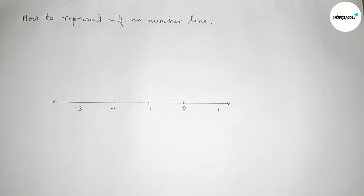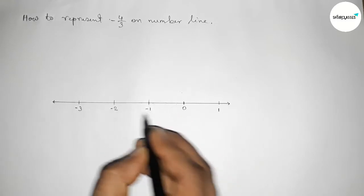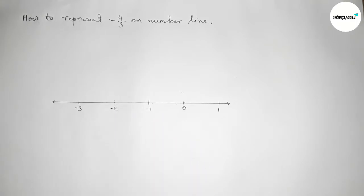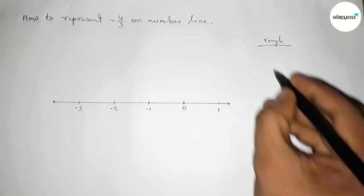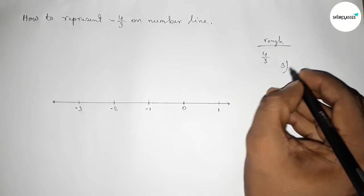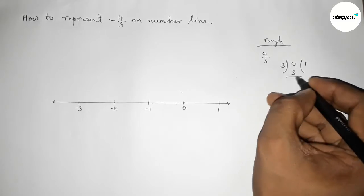The value of minus four by three will be between minus one and minus two. So now we have to divide the length between minus one and minus two. Let's roughly discuss this — first finding the value of four by three. If you divide four by three...